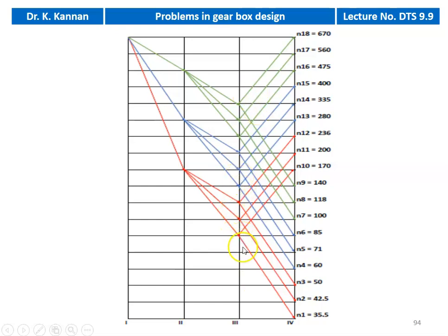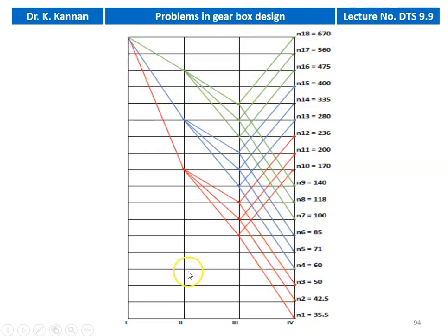In the third stage, at the beginning there are 9 speeds. For every speed, there are 2 output speeds — one increasing (i > 1) and one decreasing (i < 1). At the outlet on shaft 4, we obtain 18 speeds. All values are taken from the R40 series and this is the structural diagram for the 18-speed gearbox.